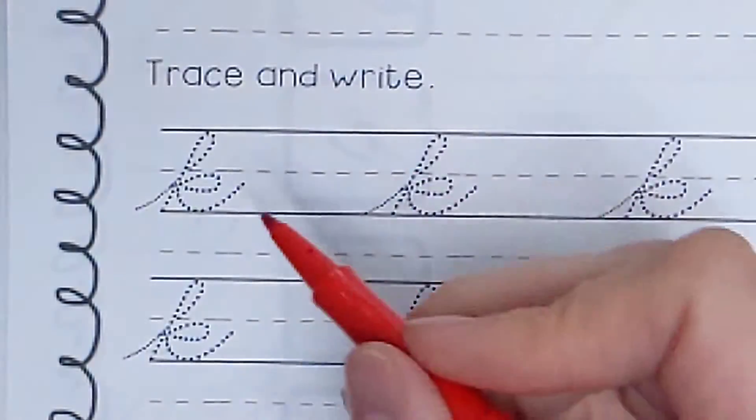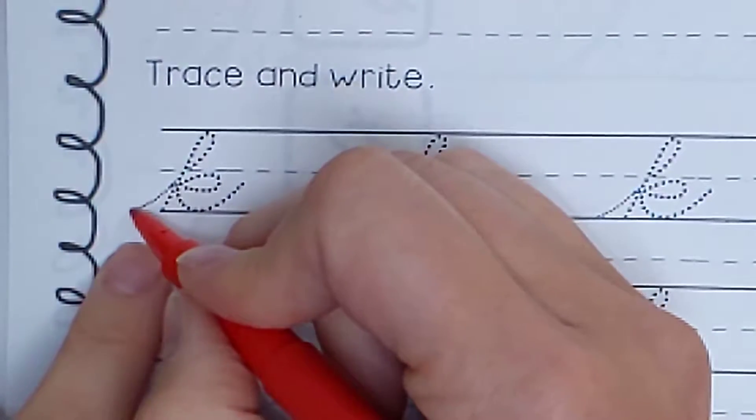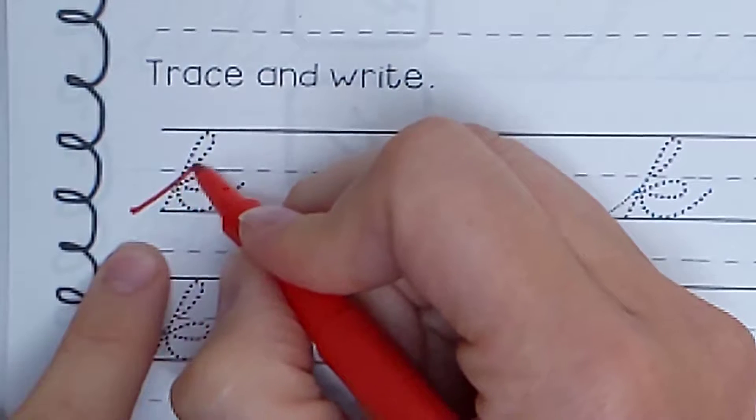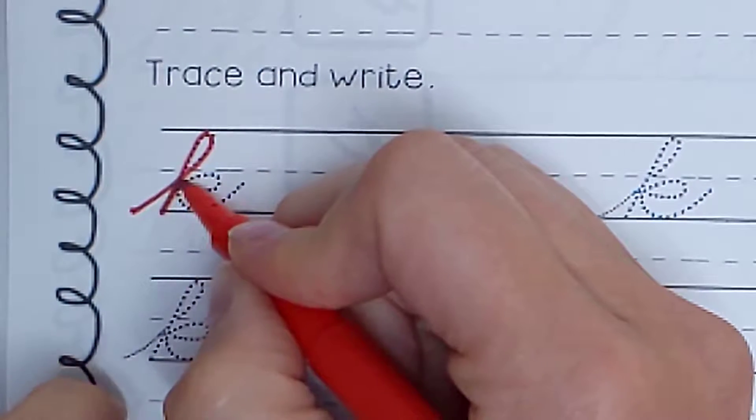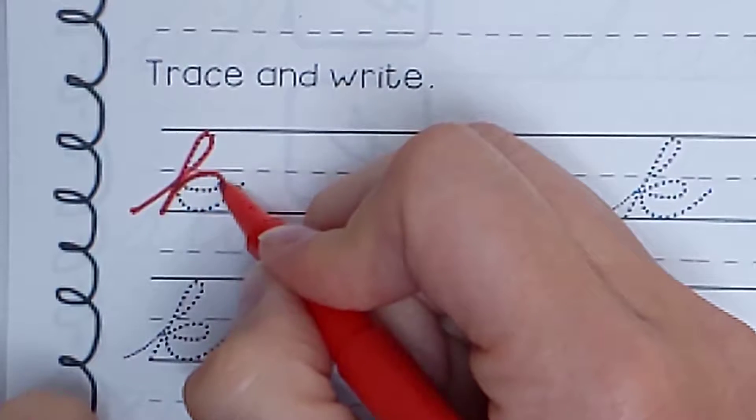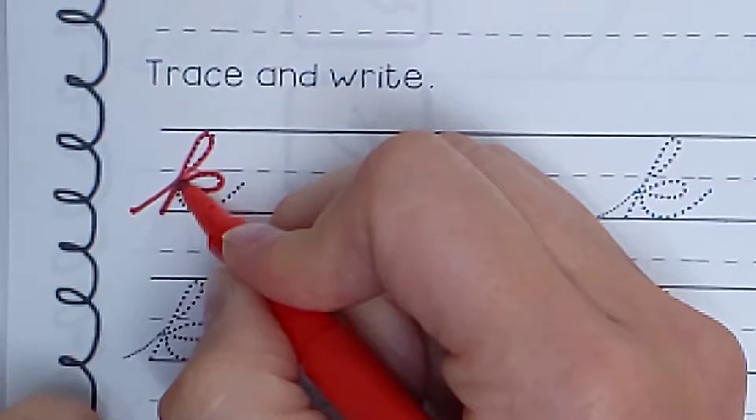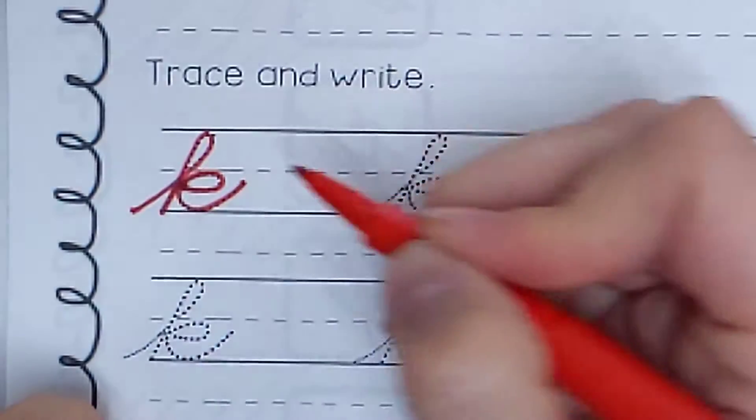So put your pencil down and watch me do the first one. Just like we did with the L. Start at the bottom. Go into the top. Loop around. Go straight down. Stop basketball bounce like we did with an H. But then you're going to go out and do a little like teardrop, touch, and go back up to connect.